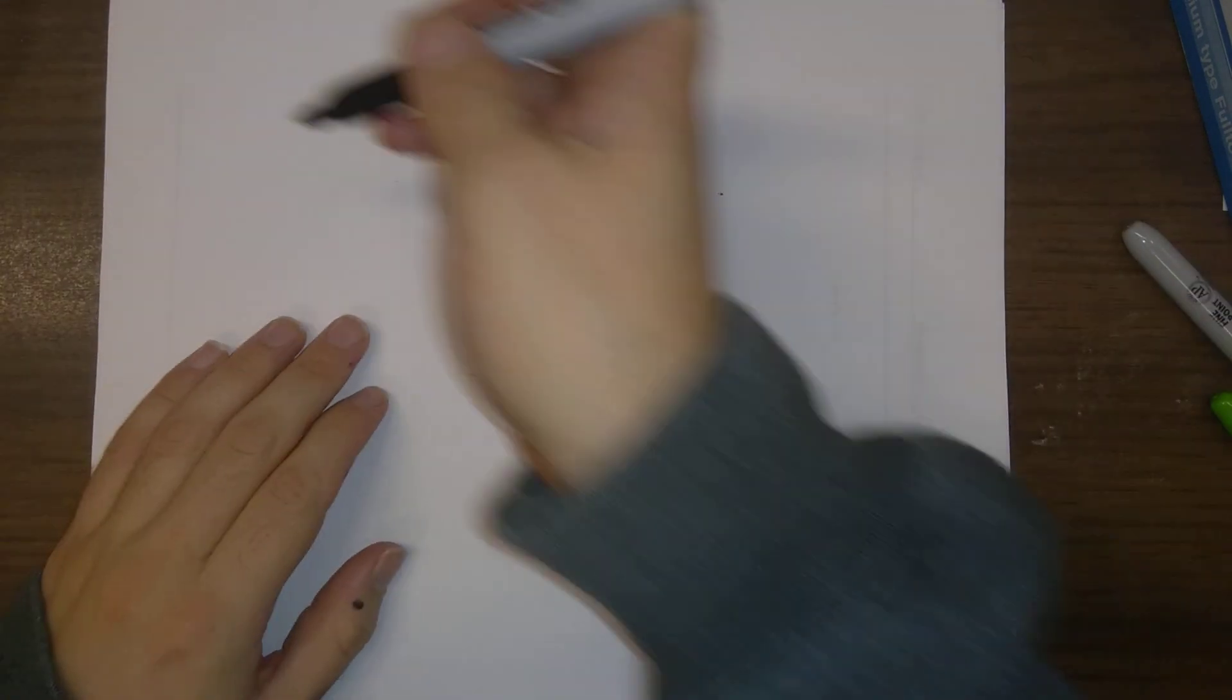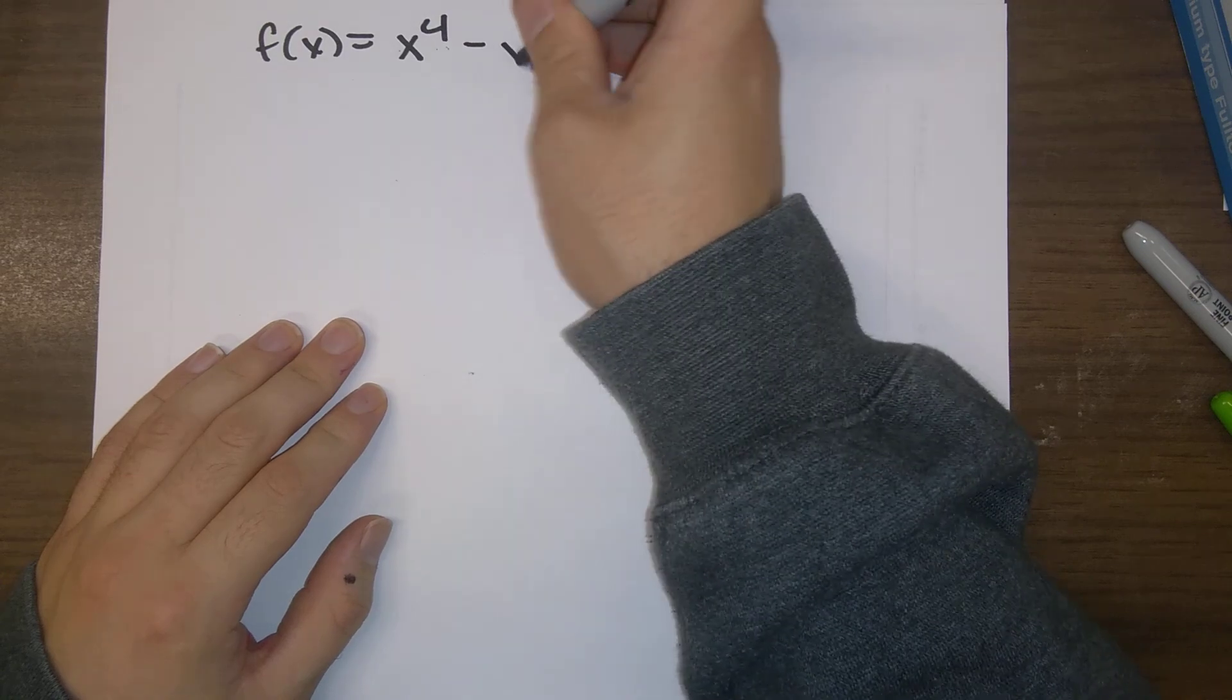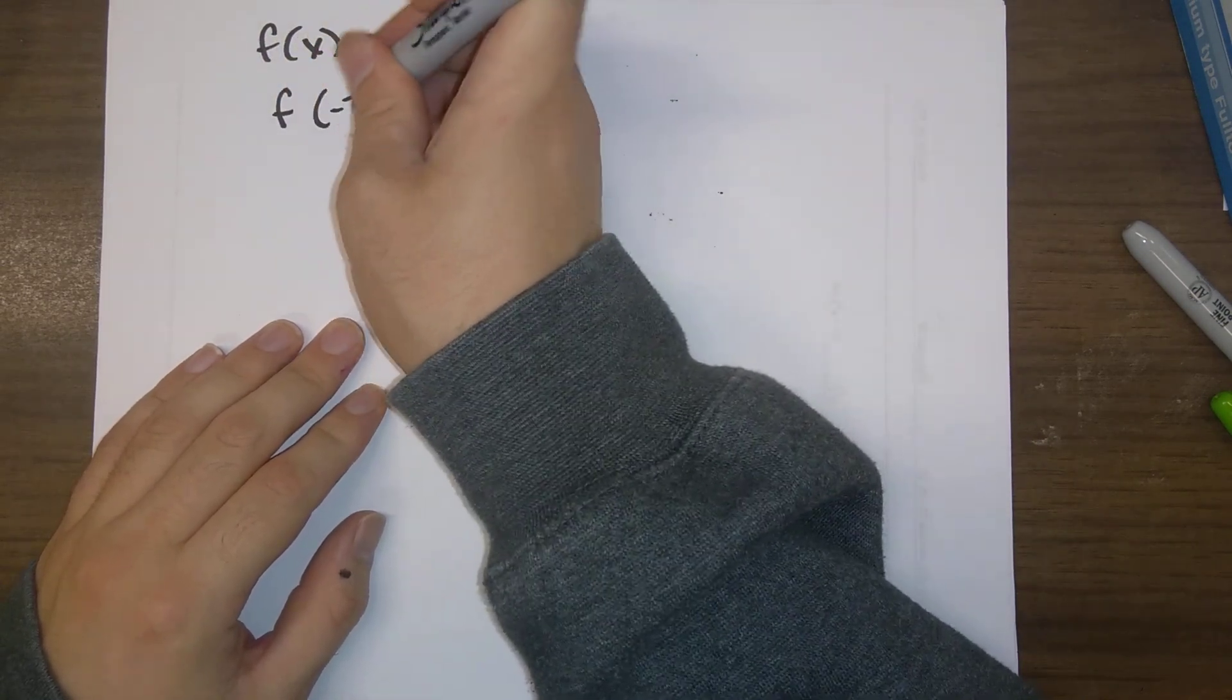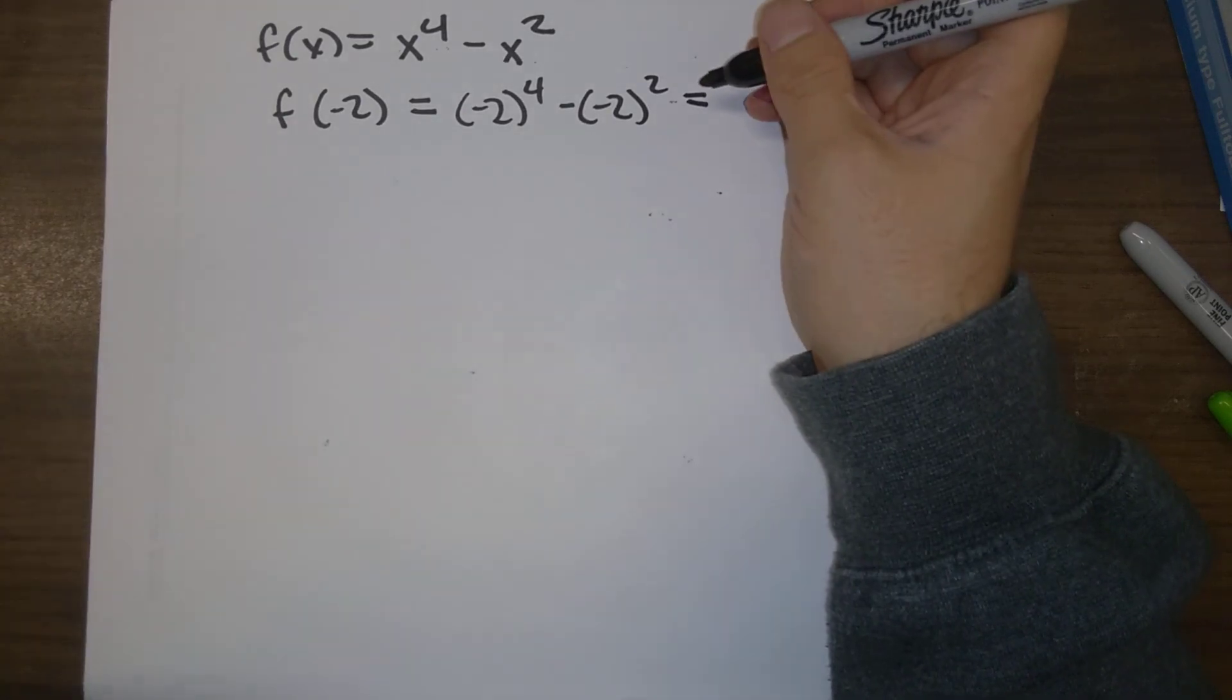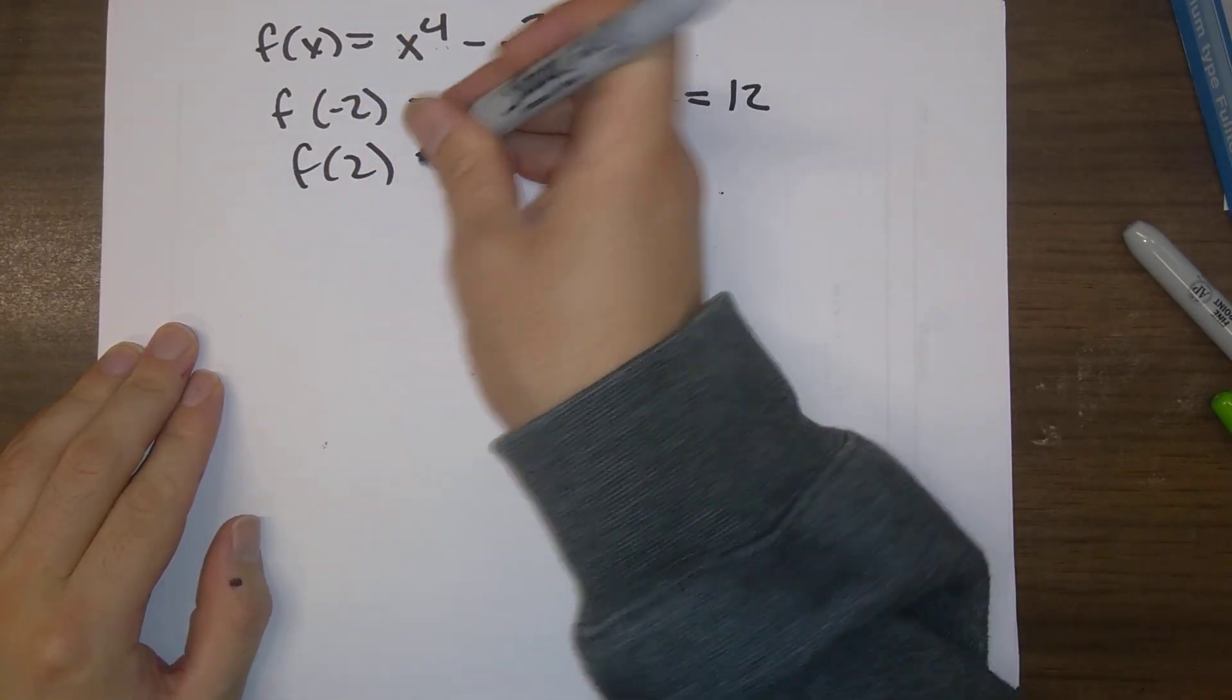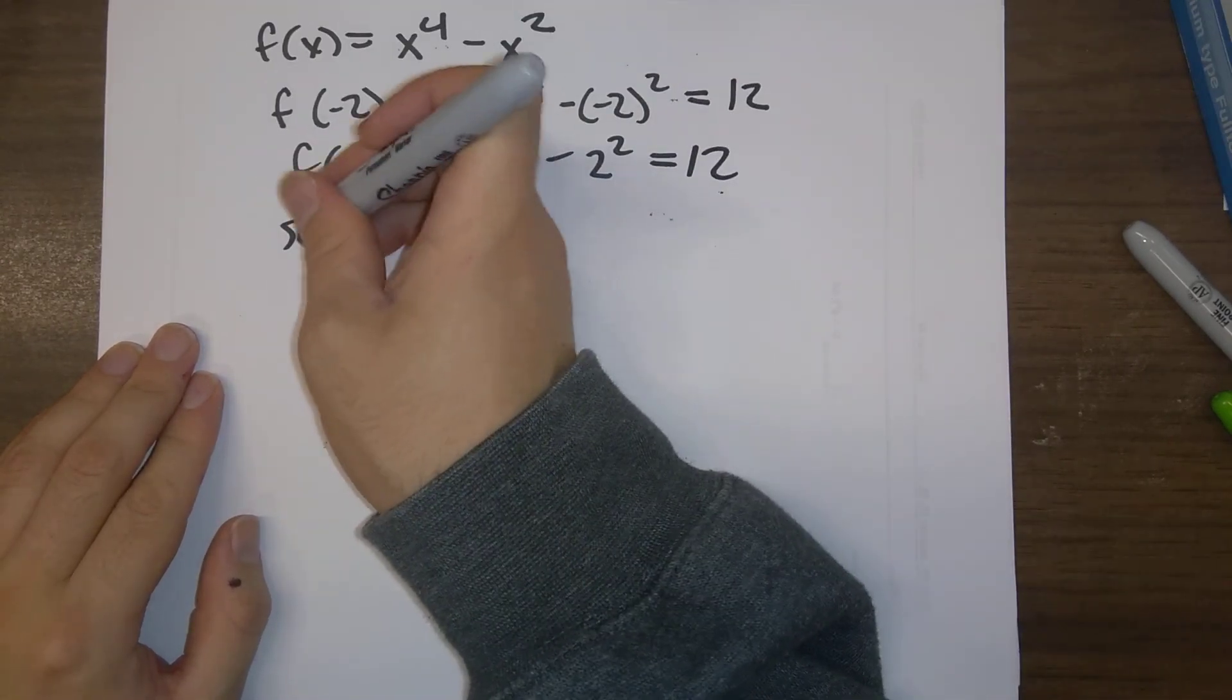So if we look at f of x is x to the 4th minus x squared, f of minus 2 is equal to minus 2 to the 4th minus minus 2 squared, and that ends up as 12. f of 2 is going to be 2 to the 4th minus 2 squared, that's also 12.